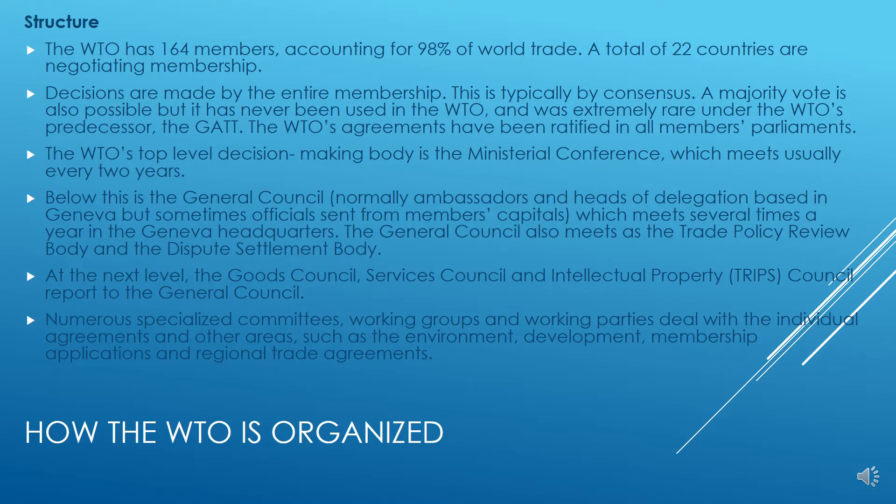The General Council meets several times a year at the Geneva headquarters. It also meets as the Trade Policy Review Body and the Dispute Settlement Body. At the next level, the Goods Council, Services Council, and Intellectual Property (TRIPS) Council report to the General Council. Numerous specialized committees, working groups, and working parties deal with individual agreements and other areas such as environment, development, membership applications, and regional trade agreements.